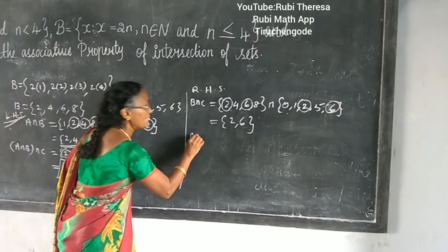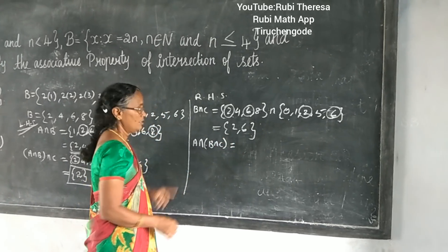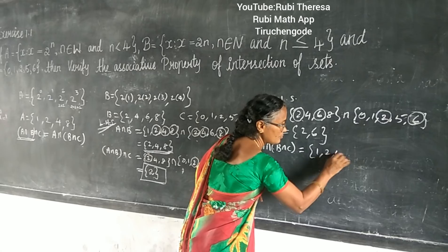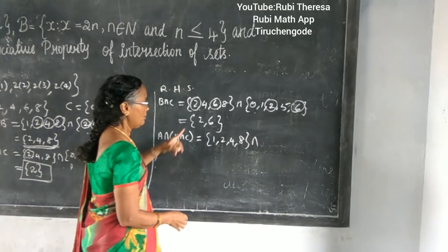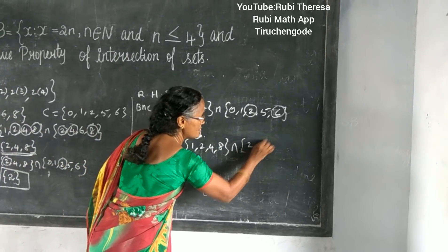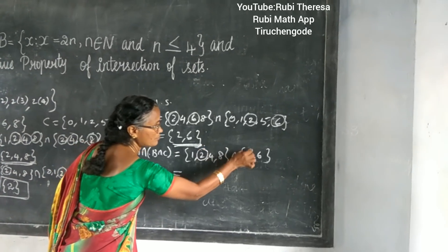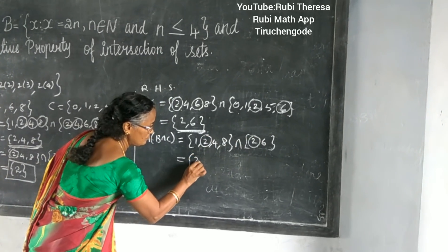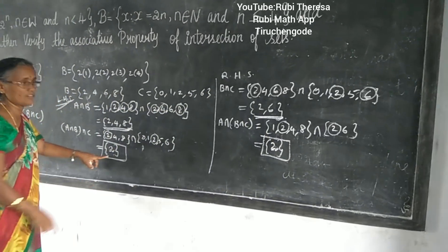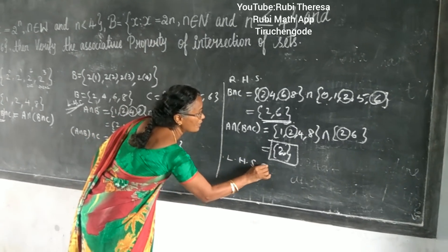Now A intersection (B intersection C). A = {1, 2, 4, 8} intersection (B intersection C) = {2, 6}. The common element is 2. So A intersection (B intersection C) = {2}. This is the final answer. LHS equals RHS.